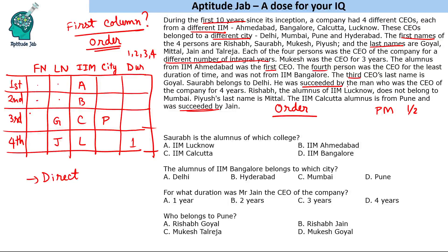Saurabh belongs to Delhi and was succeeded by the man who was CEO for four years. So Saurabh cannot be the third or fourth person — Saurabh is first or second and belongs to Delhi. The other two names, Mukesh and Rishabh, will be among the third and fourth CEOs. Rishabh is the alumnus of IIM Lucknow, so Rishabh is the fourth CEO, and he does not belong to Mumbai.